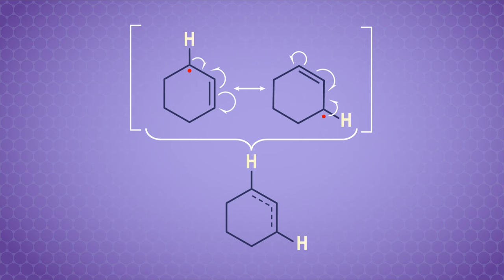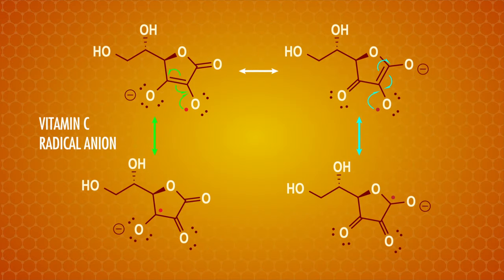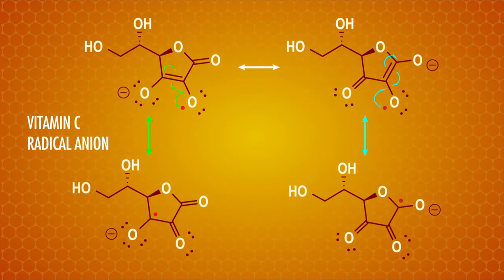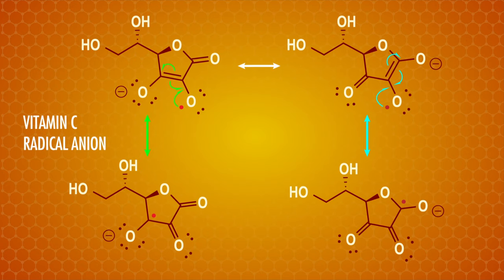Resonance stabilization in radicals is super important. In fact, the extensive resonance stabilization in the radical anion formed from vitamin C is partially why it's such a good antioxidant. Anyway, to go back to allylic bromination...